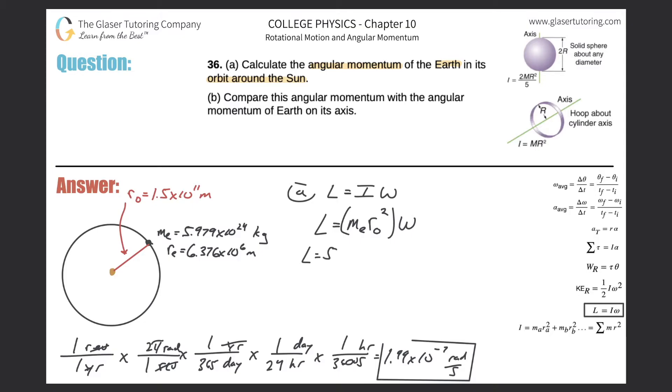Now I'm going to plug in all the values. The mass of the Earth is 5.979 times 10 to the 24th kilograms, multiplied by the radius of Earth's orbit, which is 1.5 times 10 to the 11th, and that's squared. Then multiplied by the angular velocity of 1.99 times 10 to the minus 7. L is now equal to 2.68 times 10 to the 40.